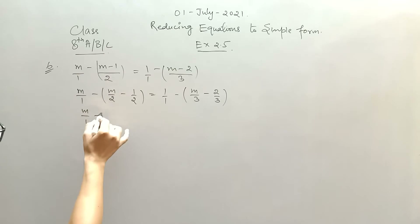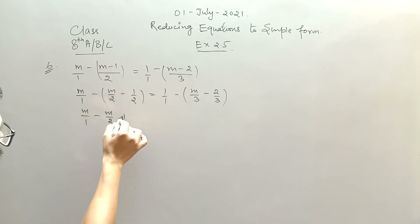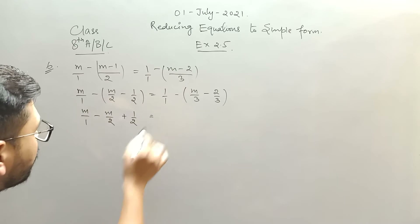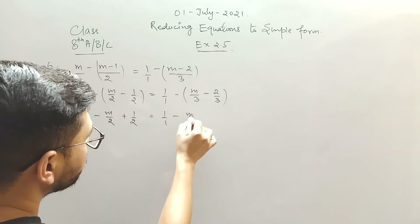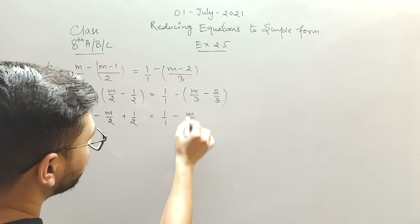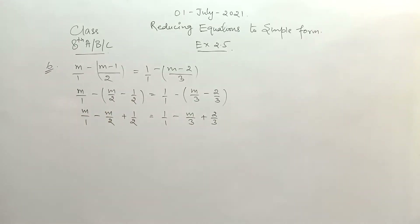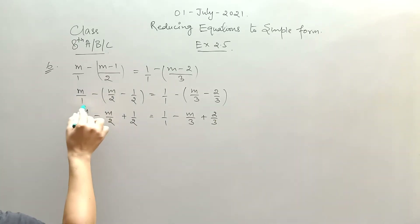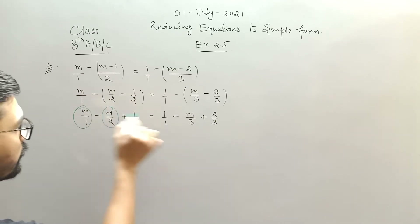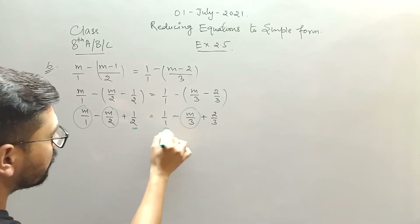Minus plus minus, so I will get m by 2. Minus minus plus, so I will get 1 by 2. Here: 1 minus plus minus, which is m by 3, minus minus plus, which is 2 by 3. Again I need to club these variables on one side — I have this variable term, this variable term, this term is a variable, and these terms are constants.